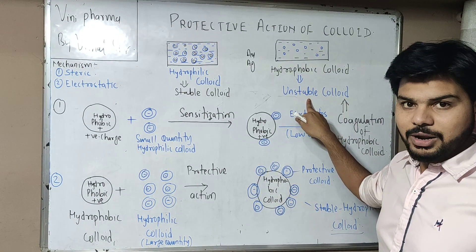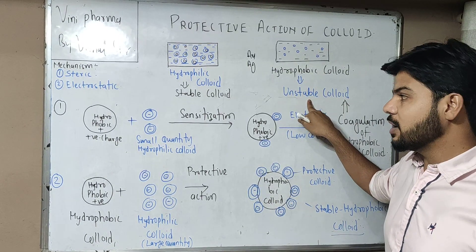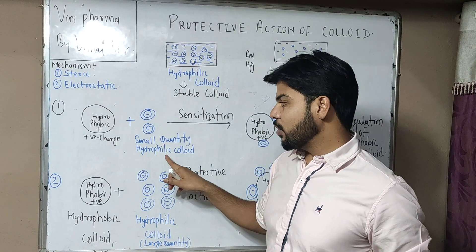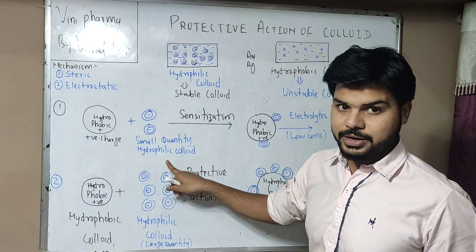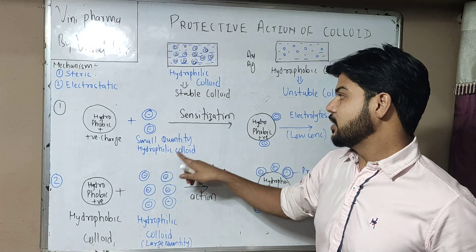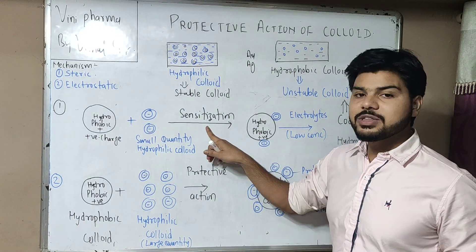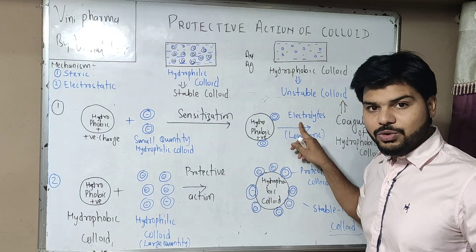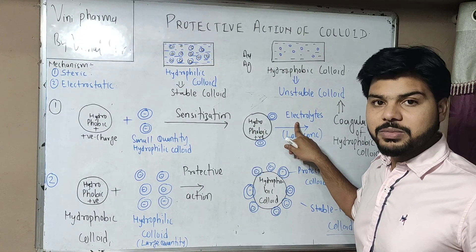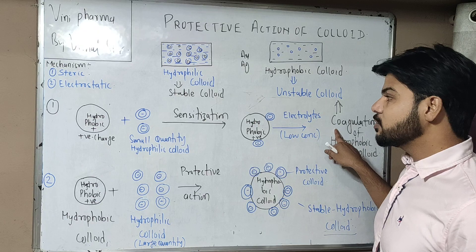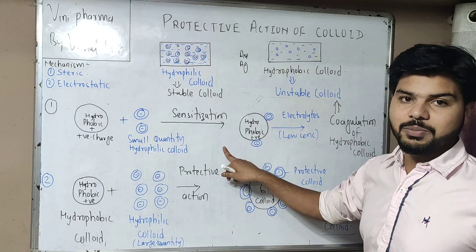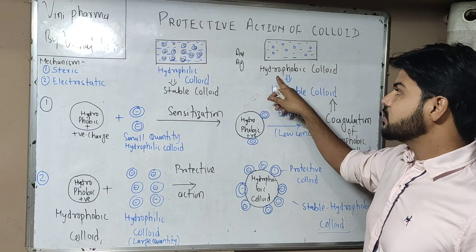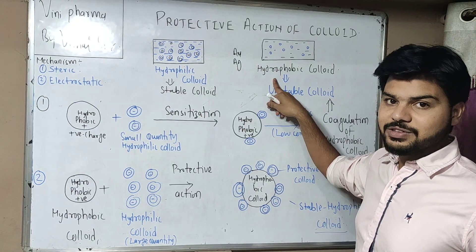This hydrophobic system is unstable. When we add a small quantity of hydrophilic colloid to a hydrophobic colloid, we call this sensitization. When we add salts or any charged particles, we get a coagulation problem — particles get coagulated. So this hydrophobic system is unstable.